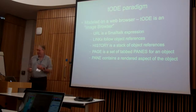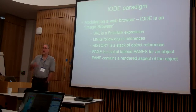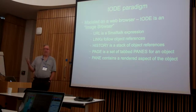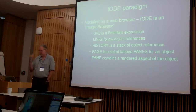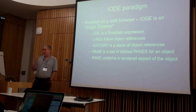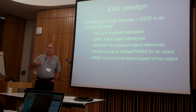The idea was modeling Toad as an image browser in your web browser — it's like using the internet, except we're now traversing your image. A URL is a Smalltalk expression. Links are following object references. History is a stack of object references. A page is a set of tabbed panes for an object, and a pane contains a rendered aspect for the object. Basically, it's hypertext for Smalltalk.